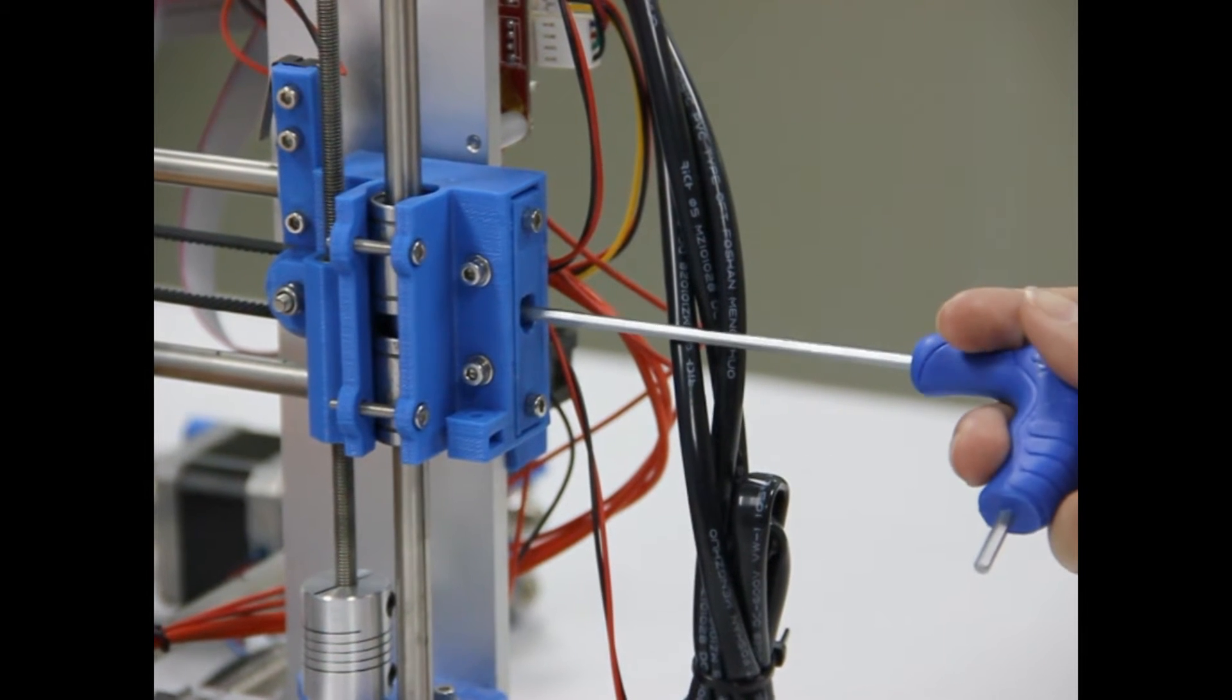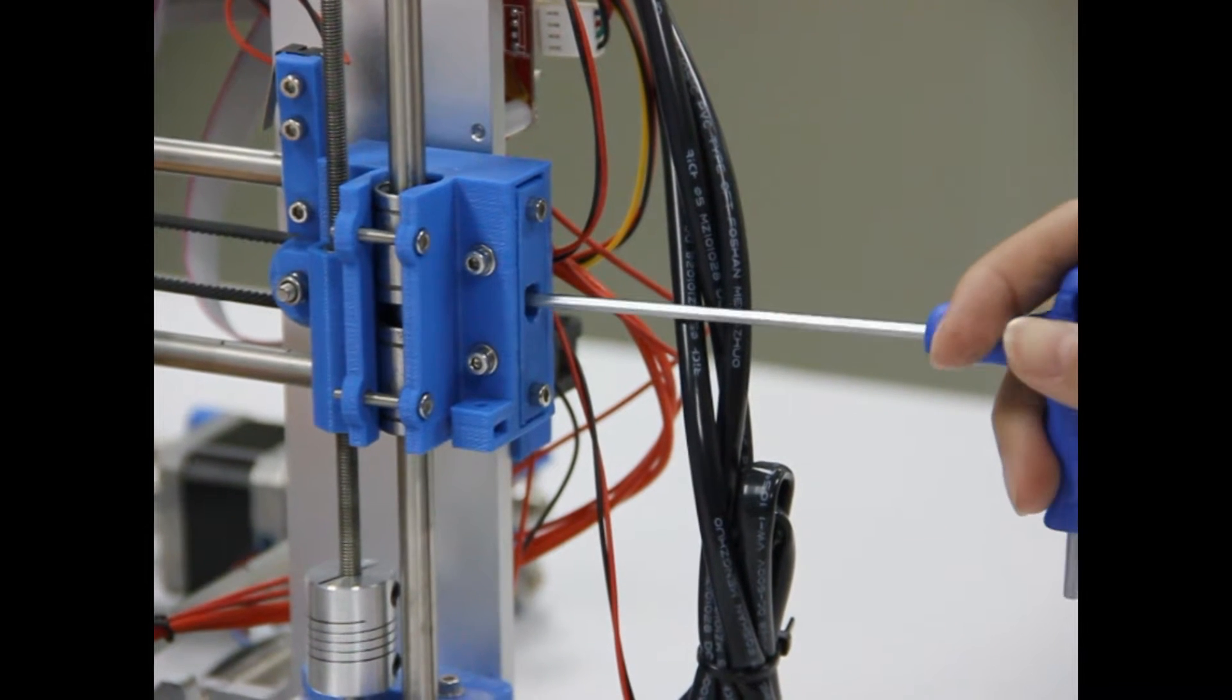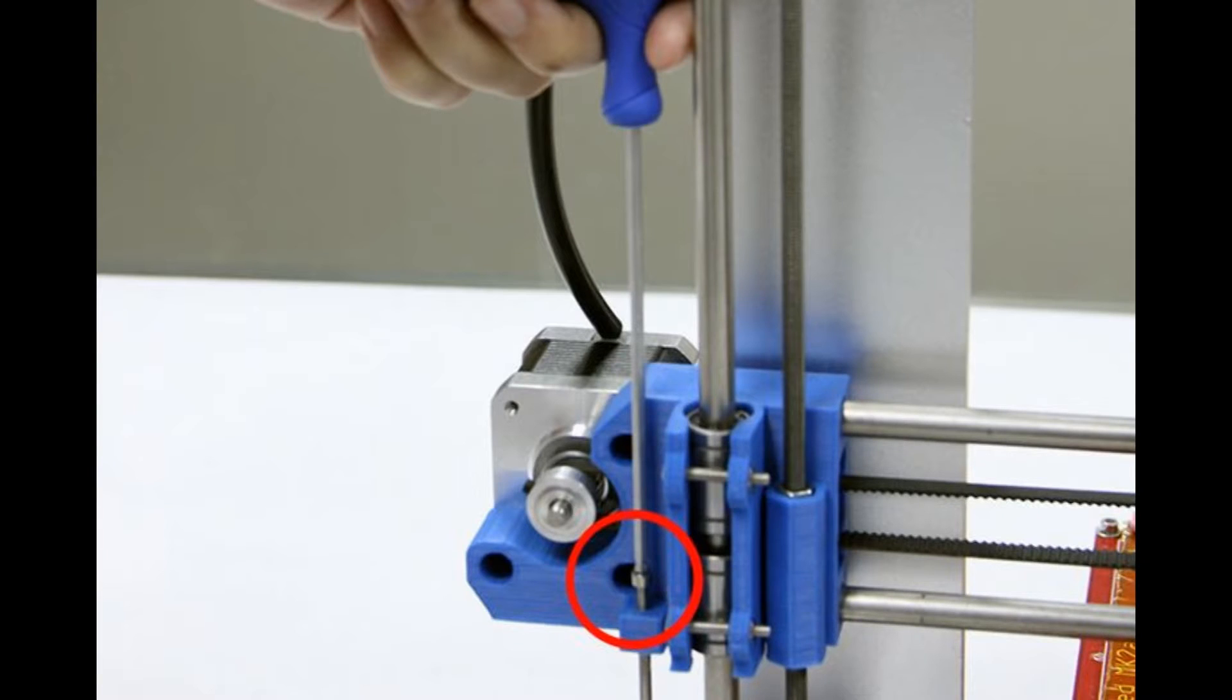As you can see, just putting the screwdriver into the hole to adjust the elastic of the belt. Here's the left side to adjust the position of the Z axis.